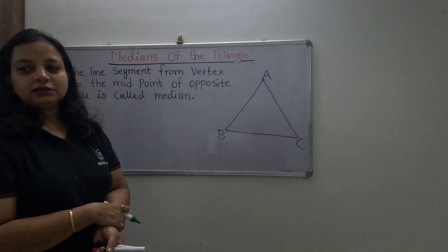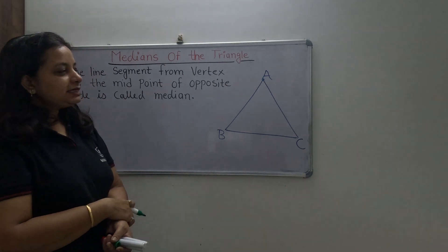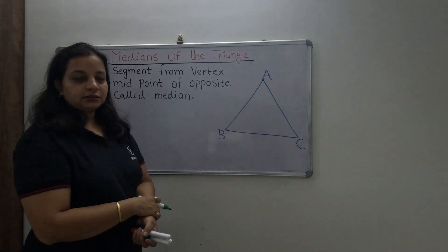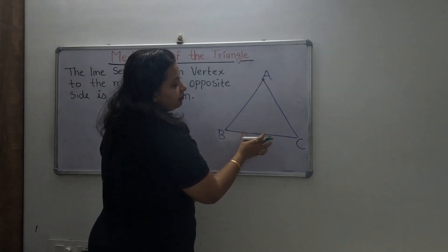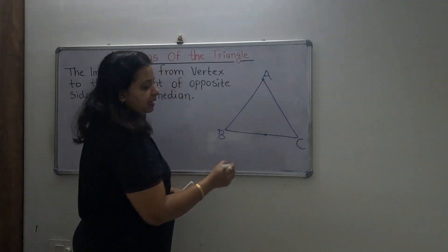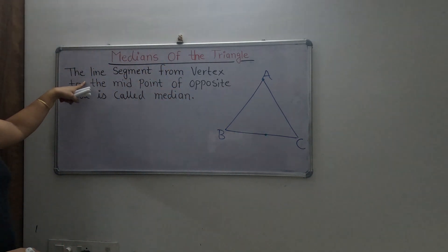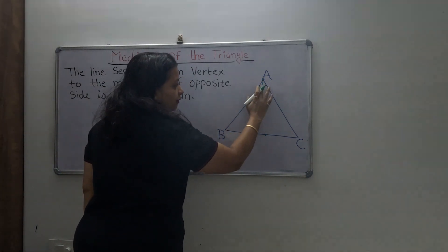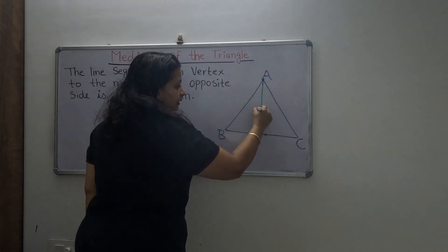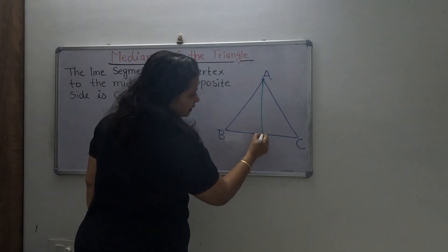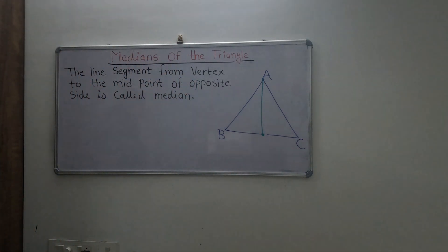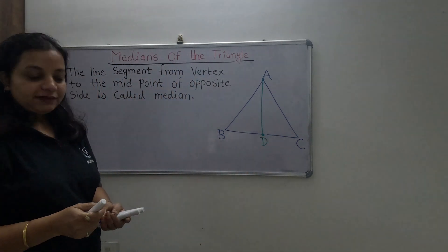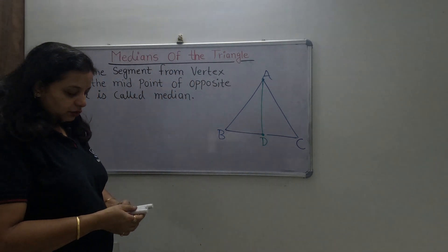Look at the board and pay attention. What is the opposite side of vertex A? It's BC. So you have to find the midpoint of BC — I'm giving this midpoint the name D.